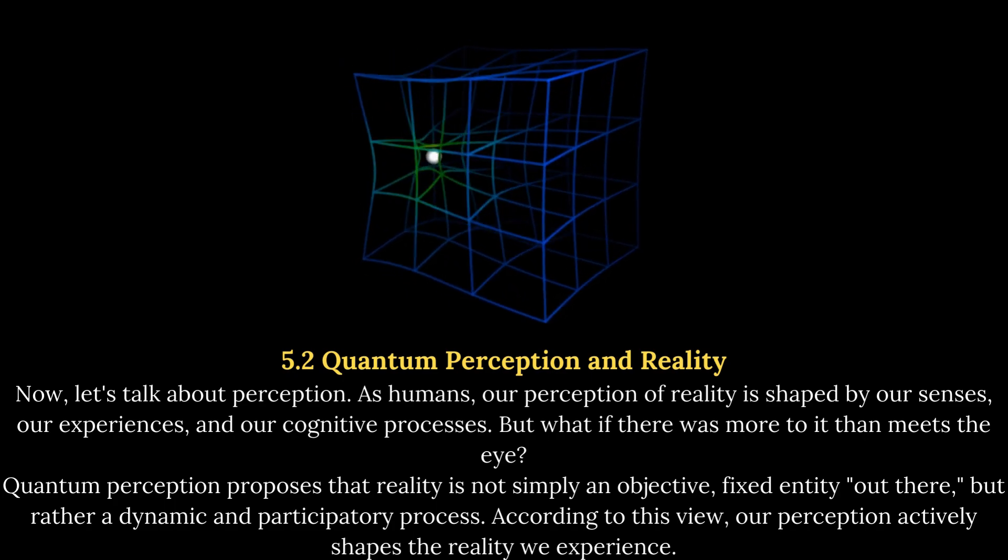5.2 Quantum Perception and Reality. Now, let's talk about perception. As humans, our perception of reality is shaped by our senses, our experiences, and our cognitive processes.